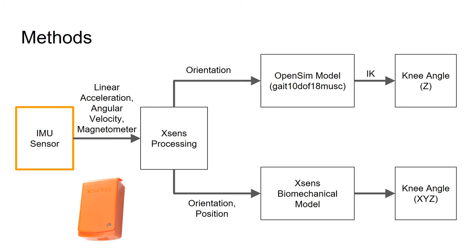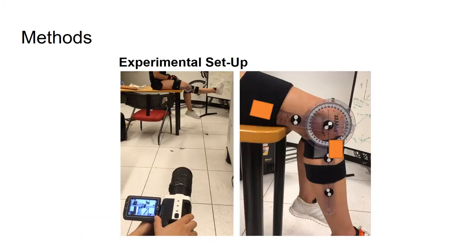As Hannah mentioned, the first step in this process is to set up the IMU sensors for data collection. To measure knee angle, we attached one IMU sensor to the thigh and one to the shank as instructed by XSens. In addition to the IMU setup, we attached a goniometer to the outside of the leg such that the center of rotation aligns with the knee joint. We placed markers along the goniometer to define thigh and shank segments combined with a high-speed camera to obtain a ground truth knee angle from motion tracking.